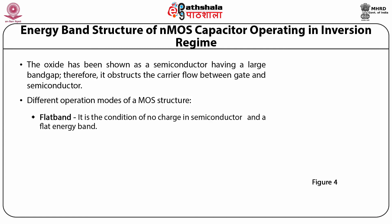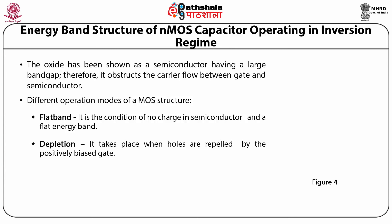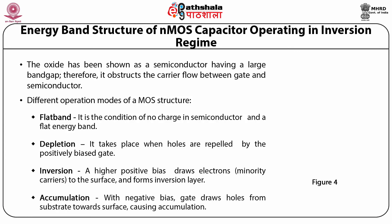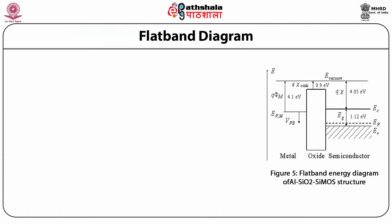There are different operation modes of an MOS structure: flat band, depletion, inversion, and accumulation. Flat band is the condition of low charge in the semiconductor and a flat energy band. Surface depletion takes place when holes are repelled by the positively biased gate, a higher positive bias draws electrons — minority carriers — to the surface forming an inversion layer, and with negative bias the gate draws holes from the substrate towards the surface causing accumulation.